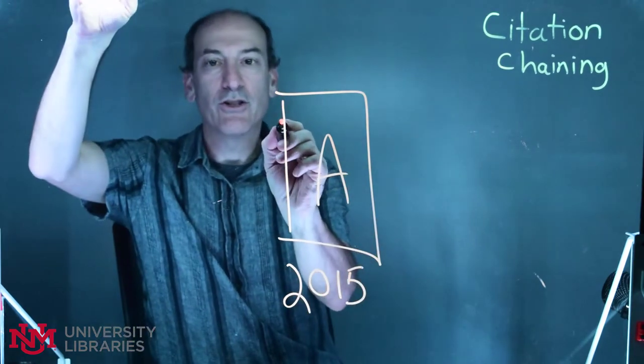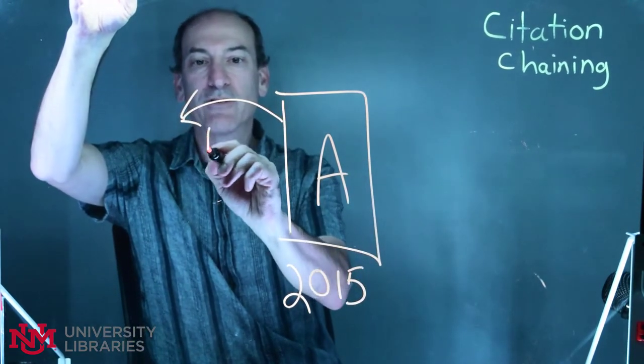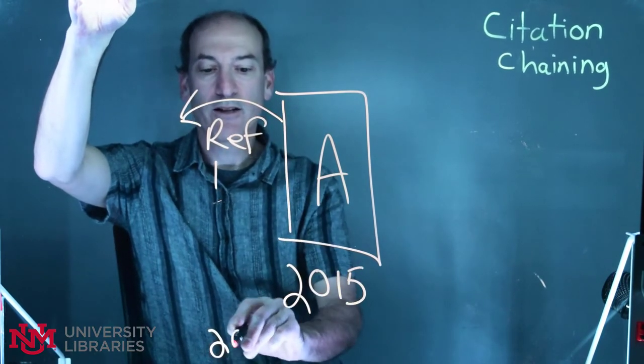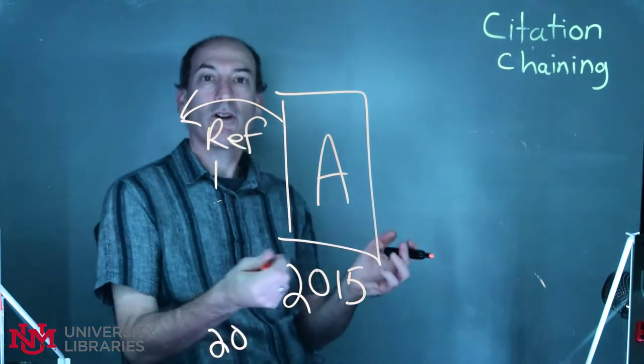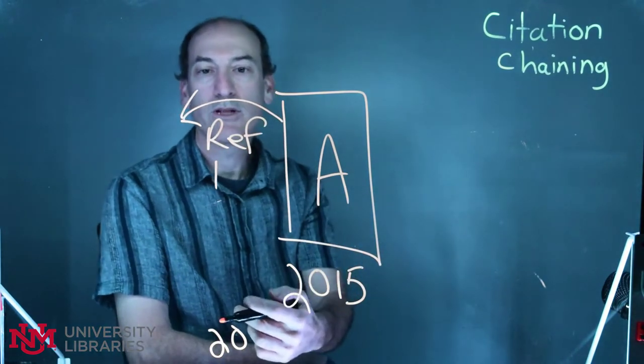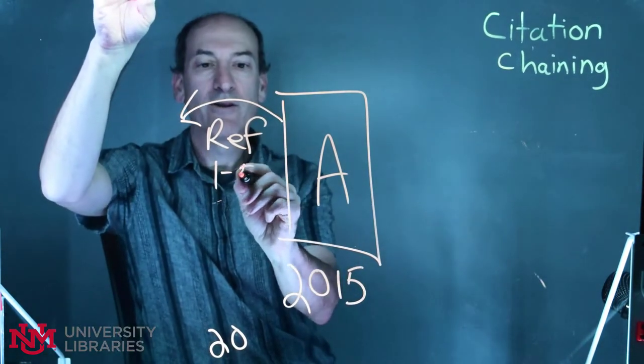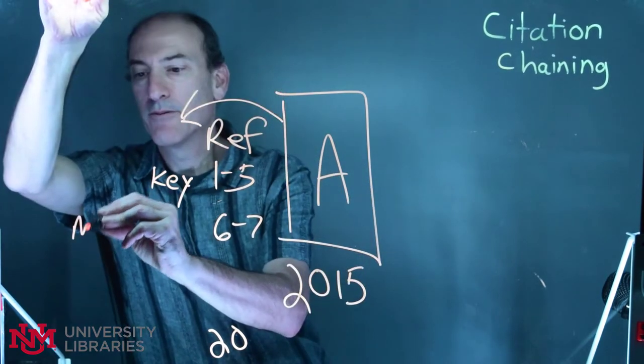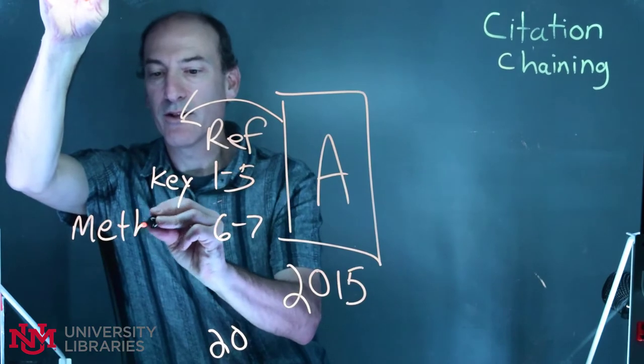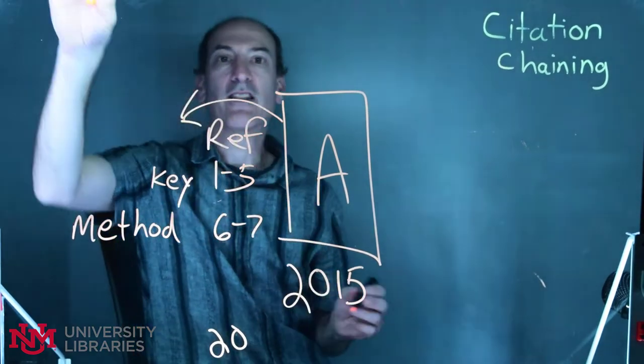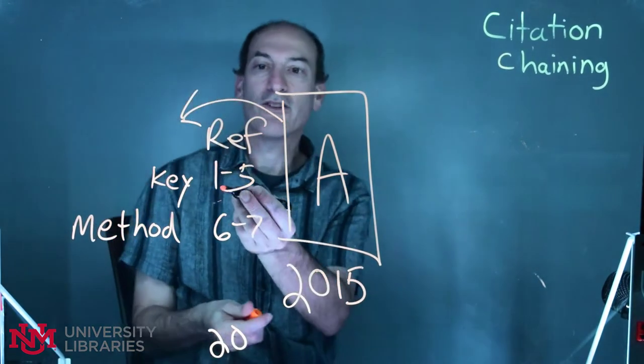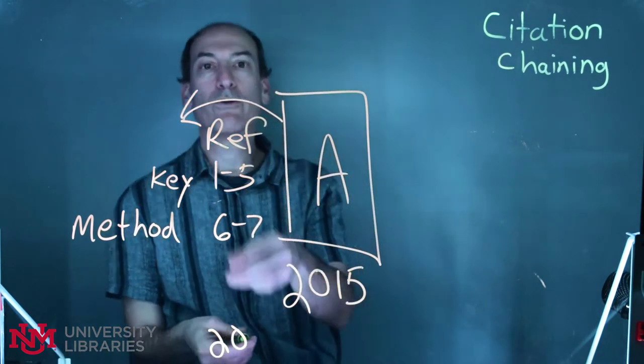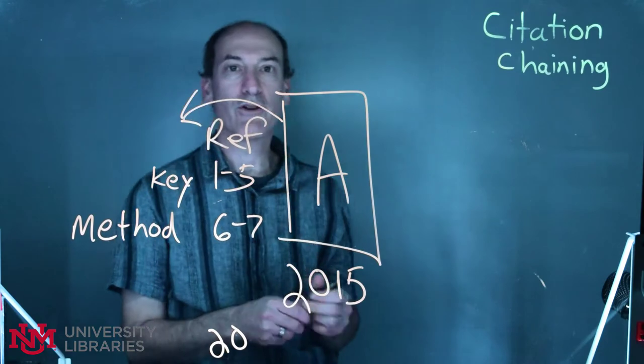Next, what you can do is go look at their references, and say it has numbers 1 through 20 references. Then you can go look through those, and maybe 1 through 5 are key that are very related to A. 6 and 7 are dealing with a method or methodology that you're interested in. So now you have these references that you can go review, find those articles. Very useful.